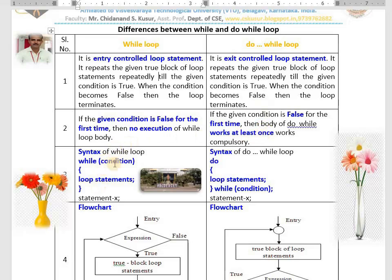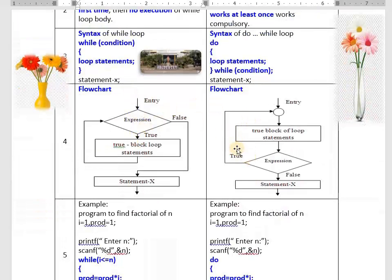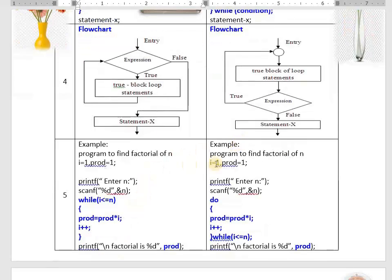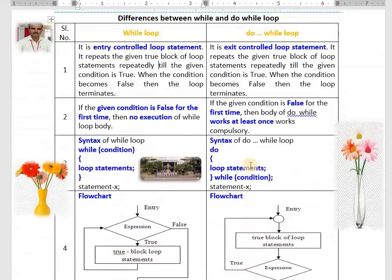And third difference, syntax of while, syntax of do-while, a flowchart of while and flowchart of do-while, give example for while and give example for do-while. It is also called pretest, is also called posttest. Write all these six. I'll explain you all these things slowly.